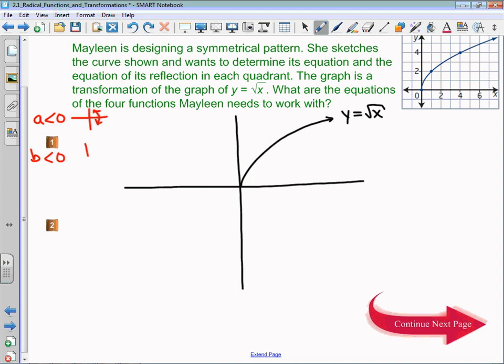If b is less than 0, we reflect across the y-axis. So what I need to do to get this red shape is apply a b parameter of negative 1, and that gives me y equals the square root of negative x.